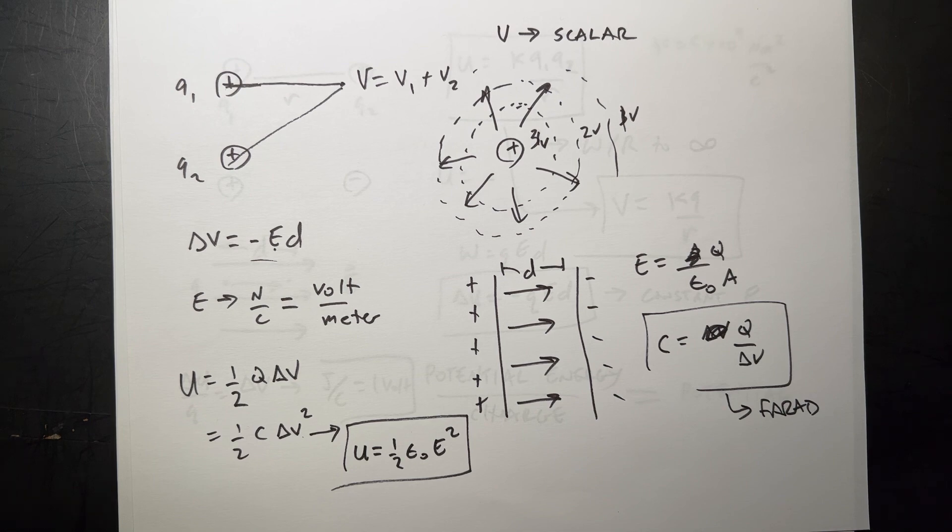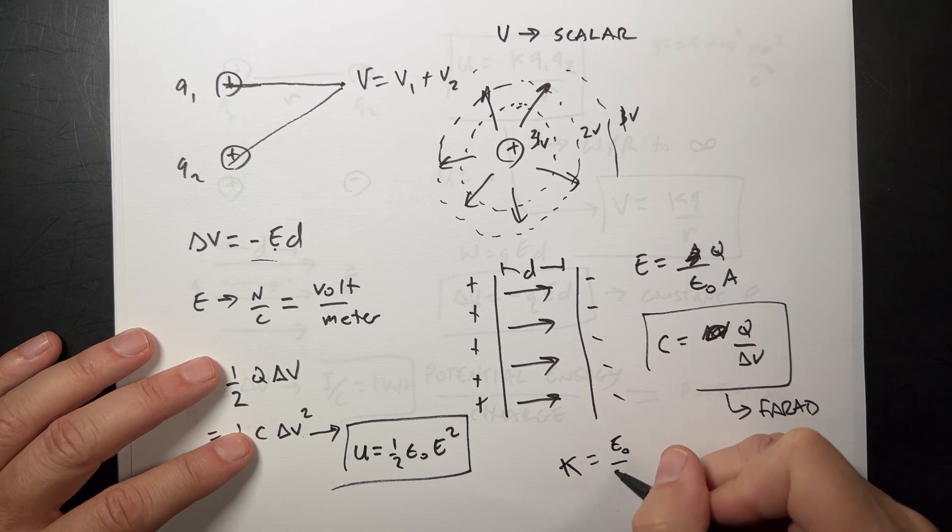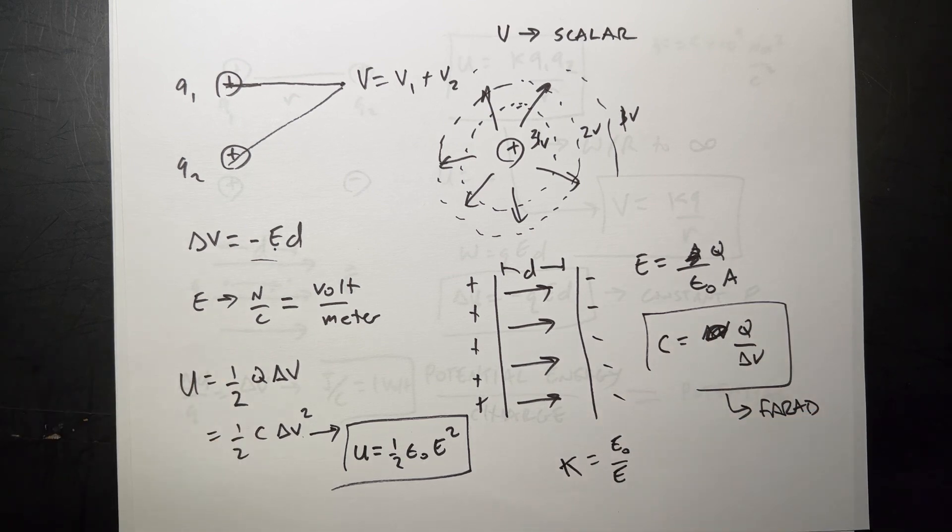There's a thing about the dielectric constant, kappa, as E zero over E. I don't really want to talk about that too much. It's kind of important. But you know, I'm trying to get to the basics, the very basics here. I think that's good enough for chapter 17. There's a lot of great applications, and we'll talk about those at some other time.